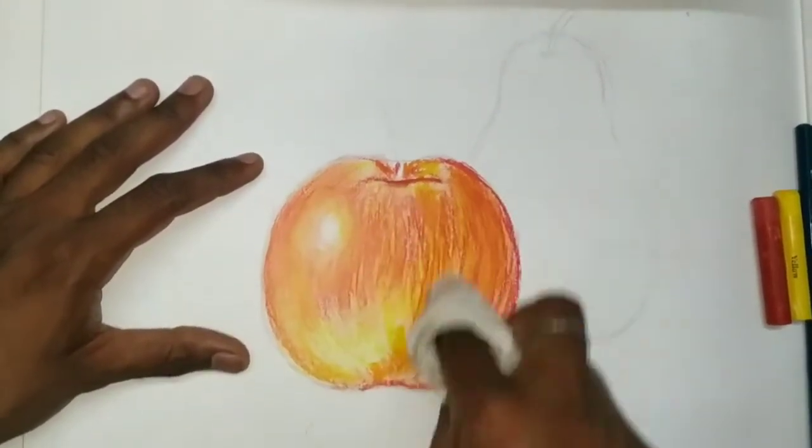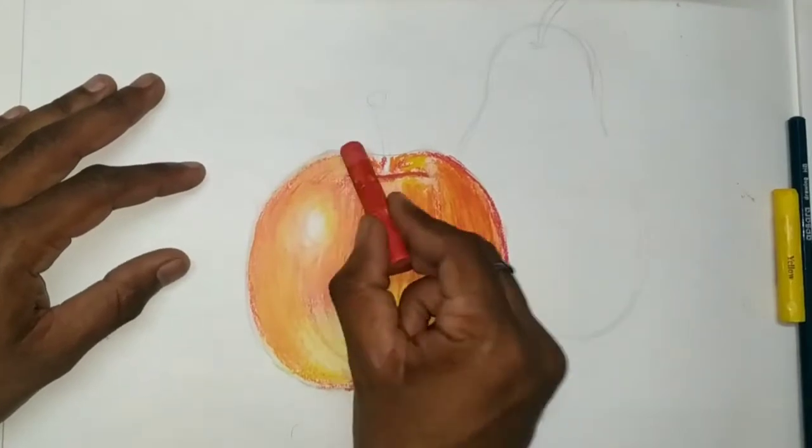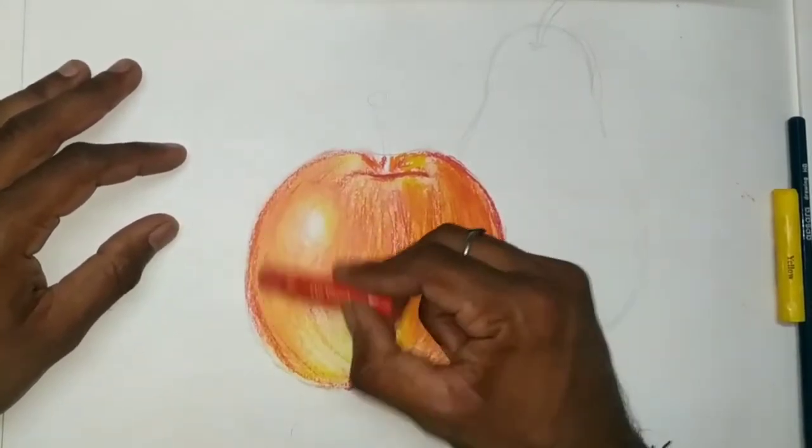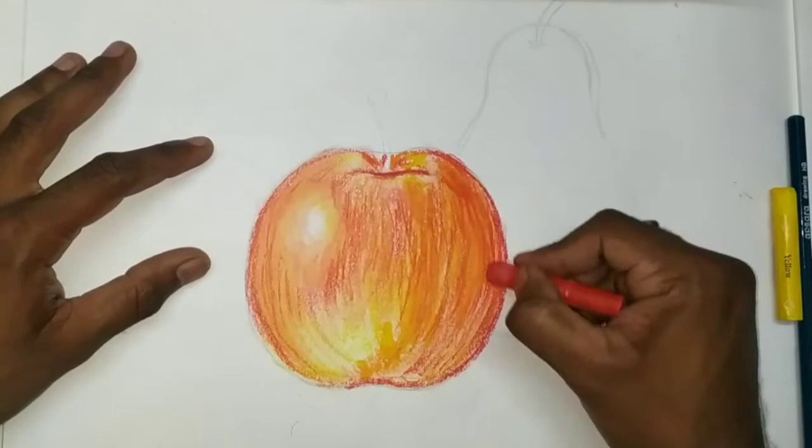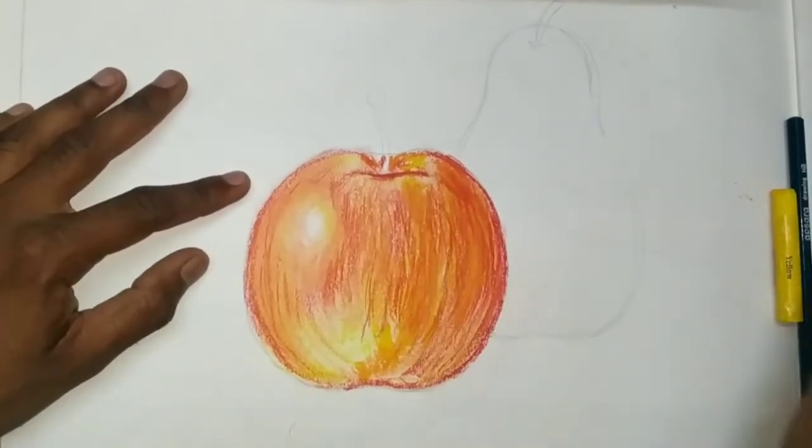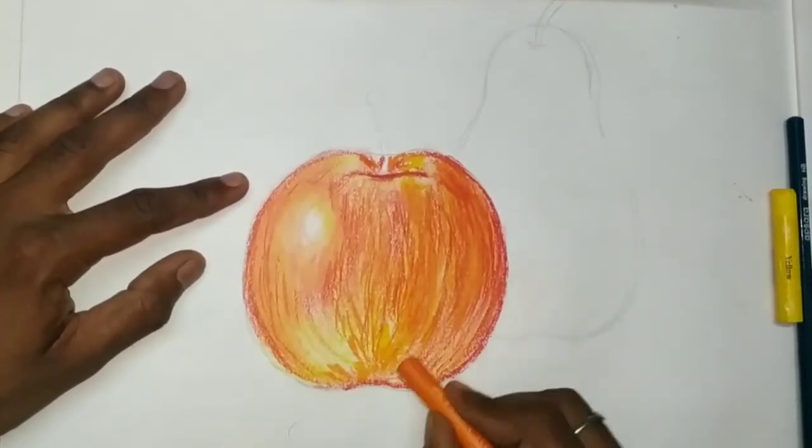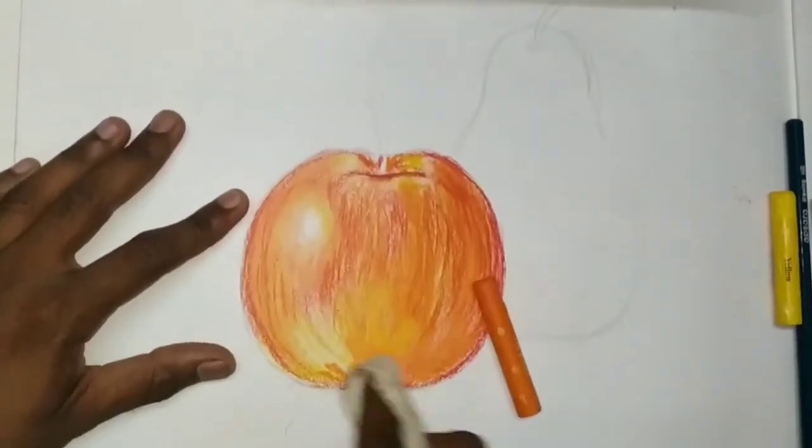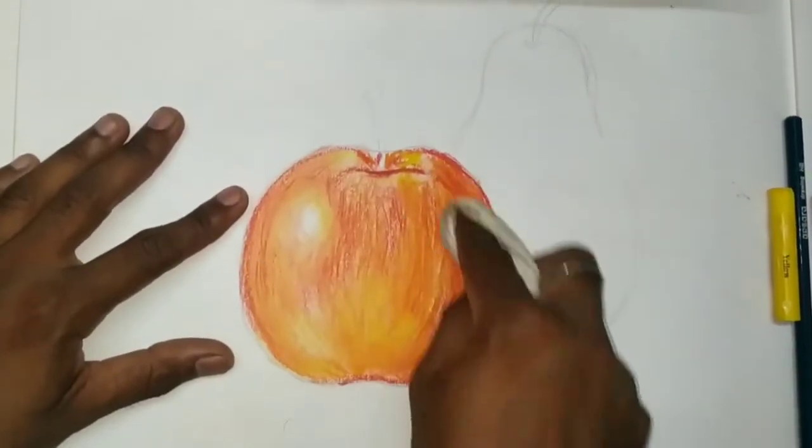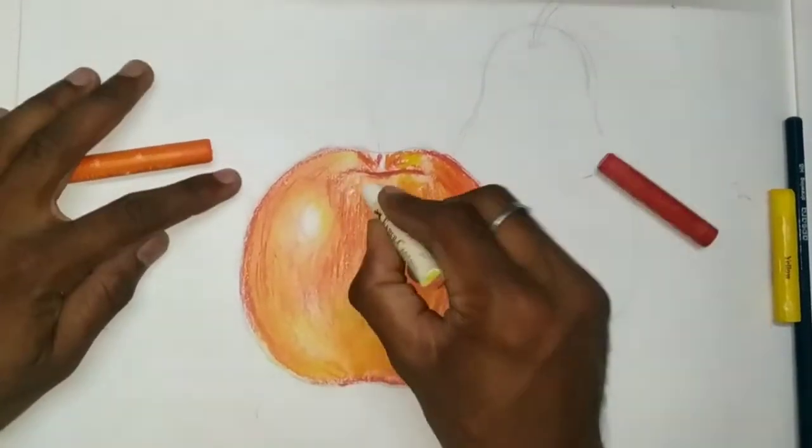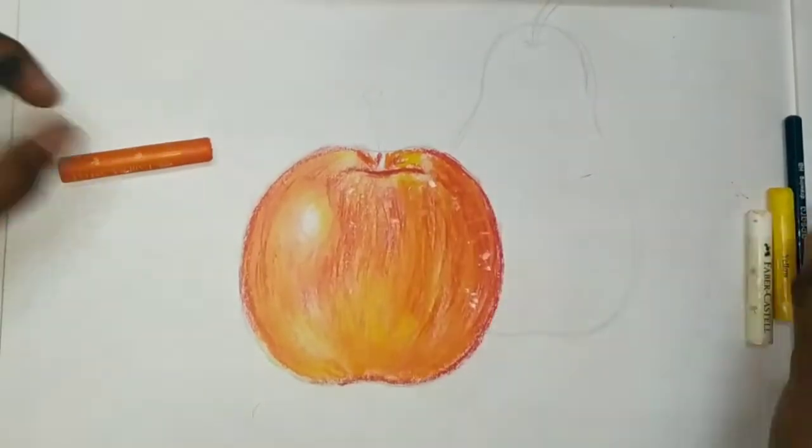Still life two fruits here we have to draw. Apple - we have yellow color base color, then red.